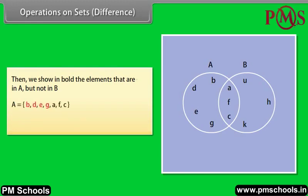A is equal to {B, D, E, G, A, F, C}. B is equal to {K, H, U, A, F, C}.